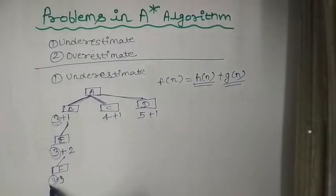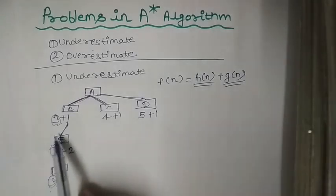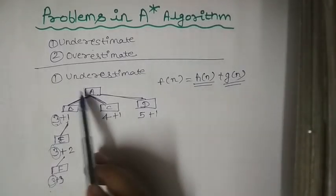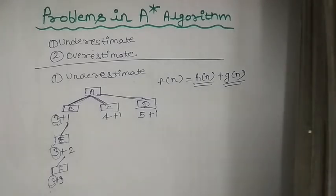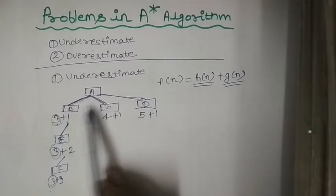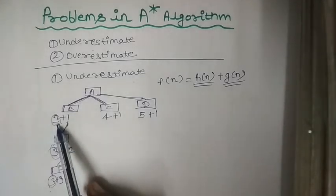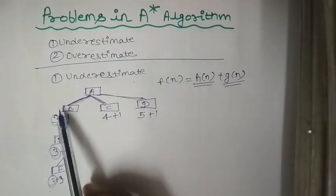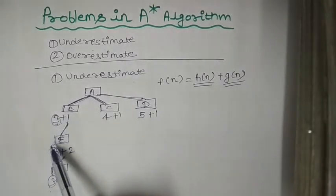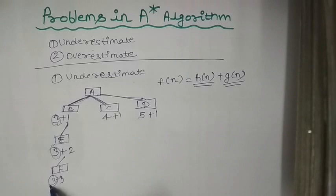So here the F(n) value underestimates the heuristic value — the heuristic value always remains the same. There is no deflection in the heuristic value. So where there is no deflection in the heuristic value, the F(n) value underestimates. This is the example of underestimate. You just have to show this graph and write the theory: here the heuristic value underestimates F(n), and there is no deflection in heuristic value.